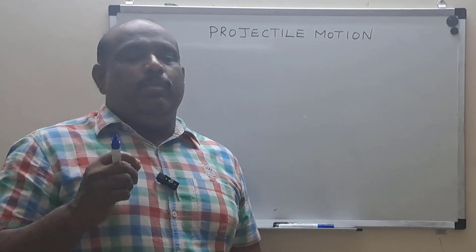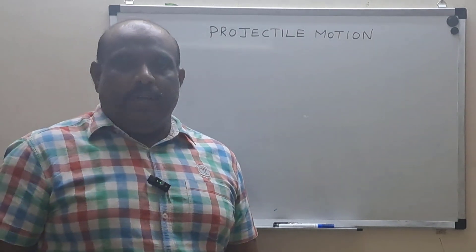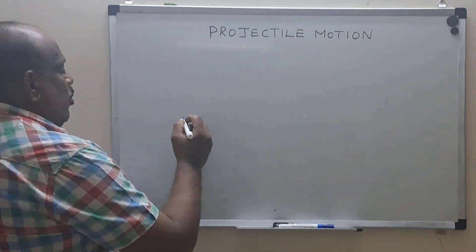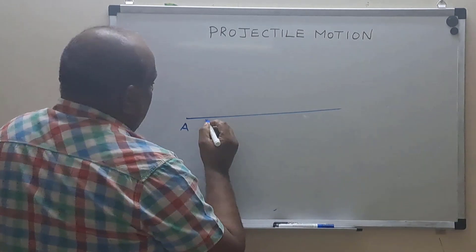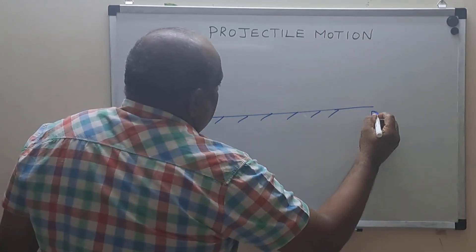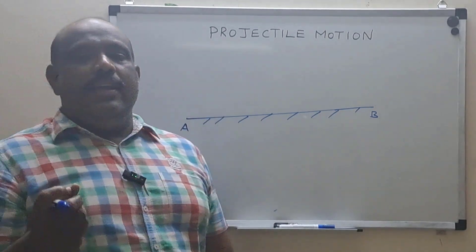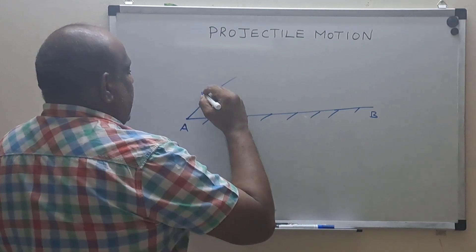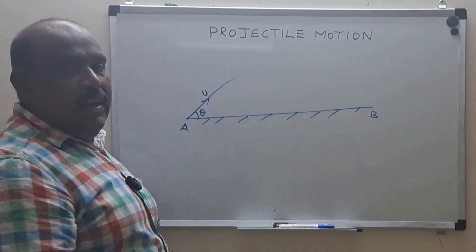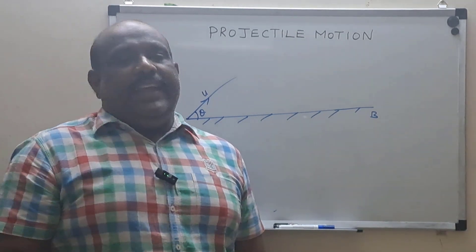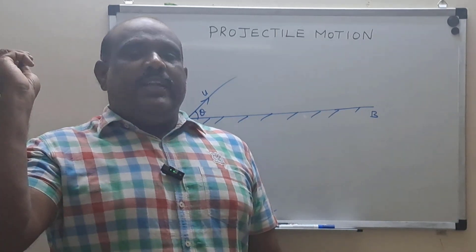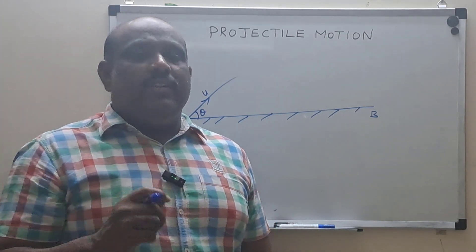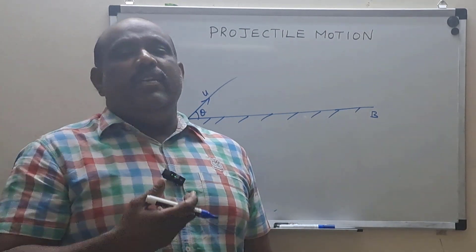With the knowledge of vector addition — how to find the resultant, how to find the angle — let us now actually start with projectile motion. I am at point A on the ground. I have a ball in my hand and I am going to throw it with an initial velocity U at an angle theta to the ground. This ball will make angle theta at the initial point.